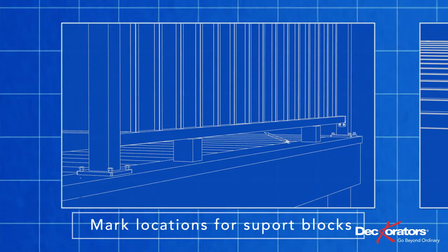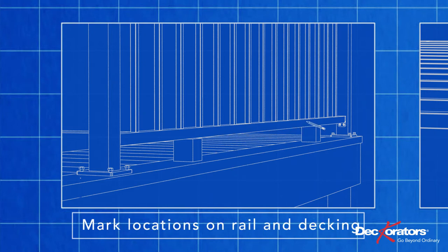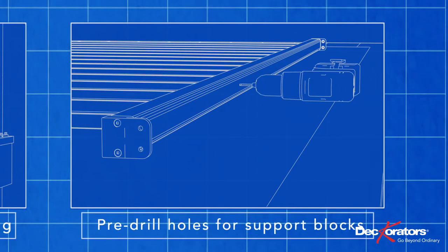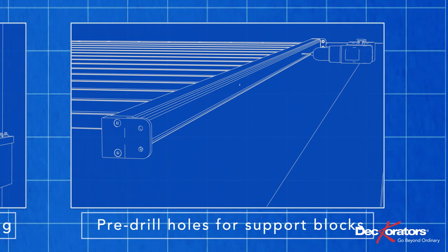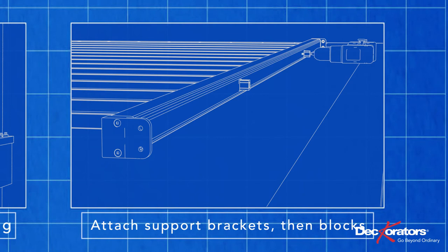Support blocks are needed at 2-foot intervals, so a 6-foot section needs two support blocks. Mark the locations for those on the lower rail and the decking. Pre-drill holes on the bottom of the lower rail for the support blocks. Use a 1-8 inch bit. Attach the brackets and then the blocks themselves.